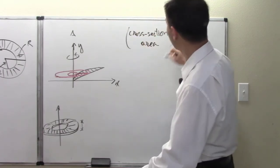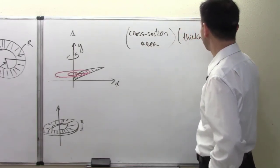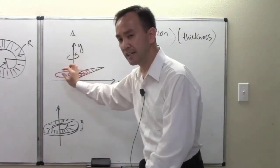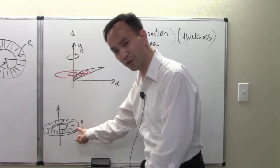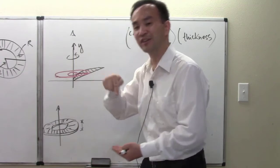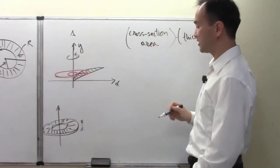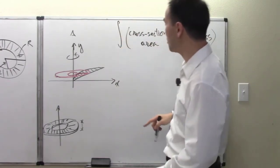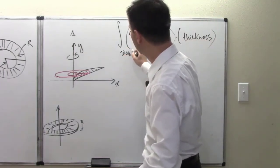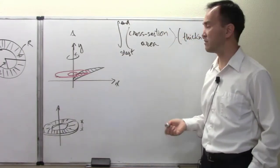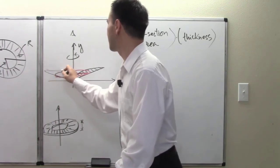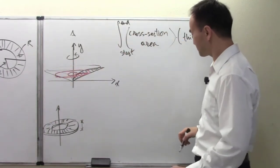For each cross-section, we find the area of the cross-section and multiply by the thickness to get the volume of each infinitesimally thin washer. Then we accumulate all those washer volumes — stacking them from the beginning to the end — to obtain the total volume of the entire solid.